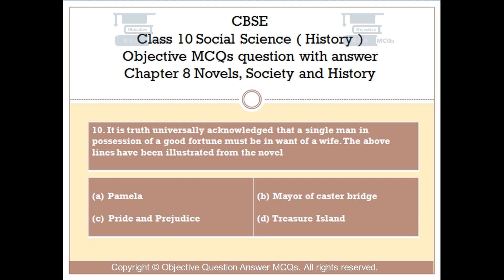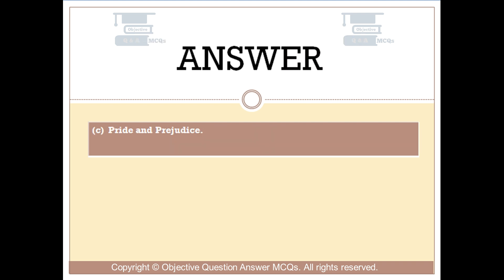Question number 10. 'It is a truth universally acknowledged that a single man in possession of a good fortune must be in want of a wife.' The above lines have been taken from the novel: Option A: Pamela. Option B: Mayor of Casterbridge. Option C: Pride and Prejudice. Option D: Treasure Island. The right answer is Option C — Pride and Prejudice.